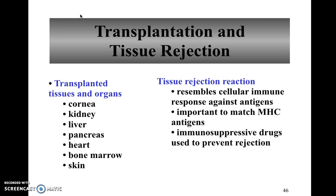Even with a close match, you still don't have a perfect match unless it's an autograft or an isograft. So often we have to use immunosuppressive drugs to prevent the immune response, but this makes the person more susceptible to infections. We then sometimes have to give therapeutic doses of antibiotics to prevent harmful bacterial infections.